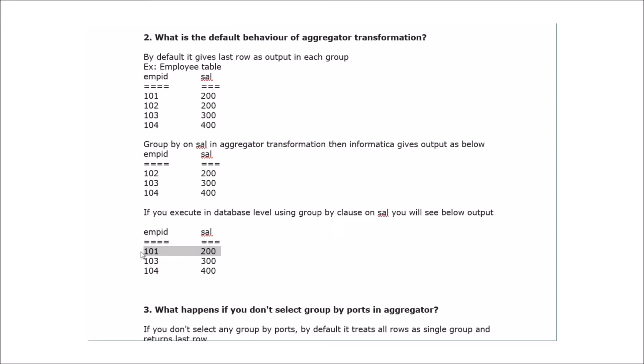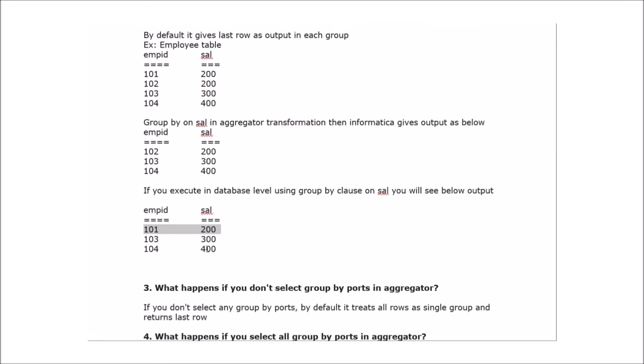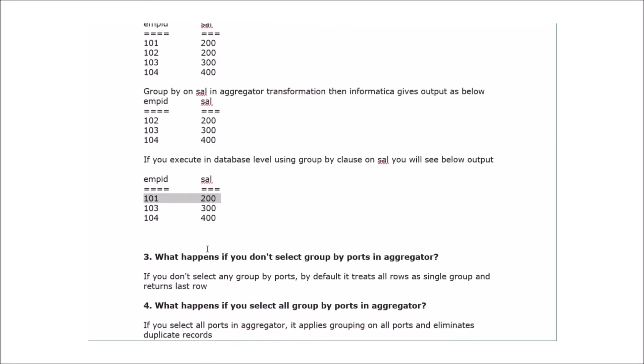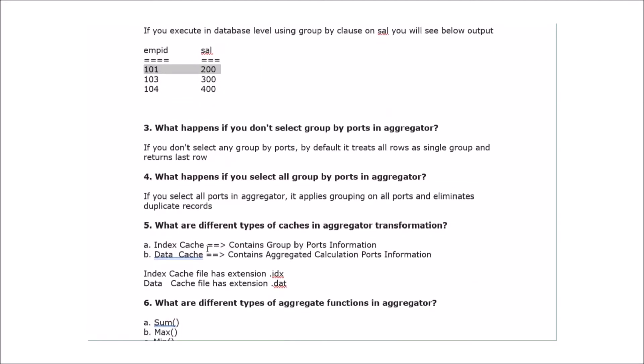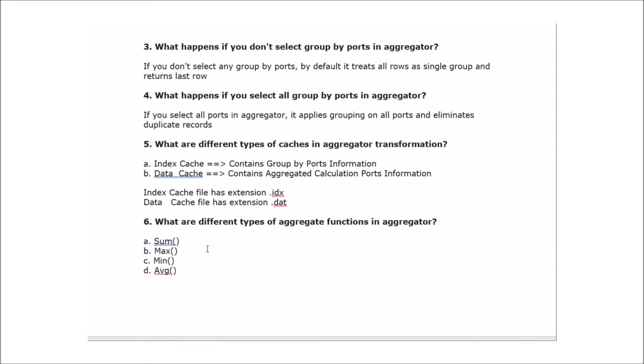This is the difference between Informatica and DB-level group by. In DB, if you perform a SELECT with group by on the same table, it returns the first record — 101 with 200 — not the last. So if you perform group by in aggregator it gives the last record for duplicates, whereas at DB level group by returns the first record.